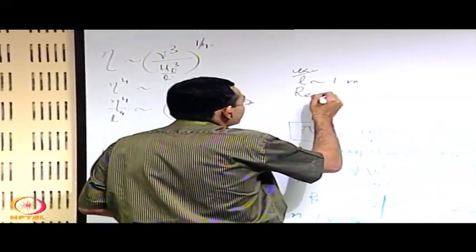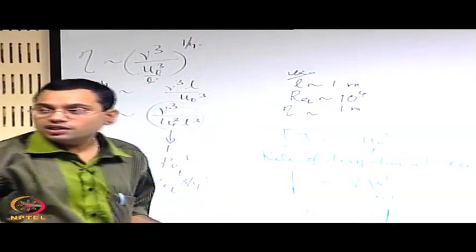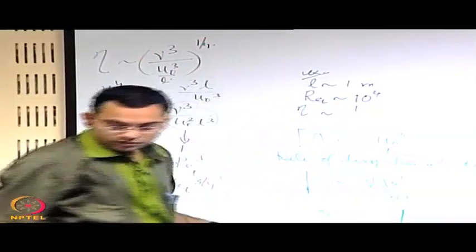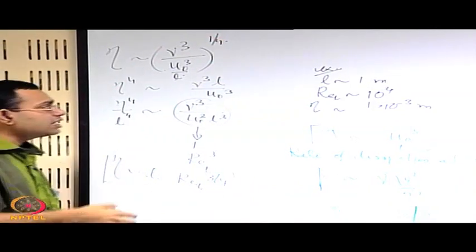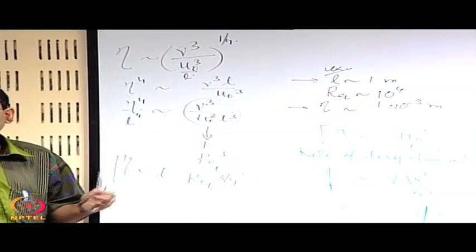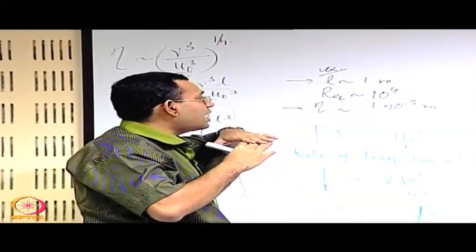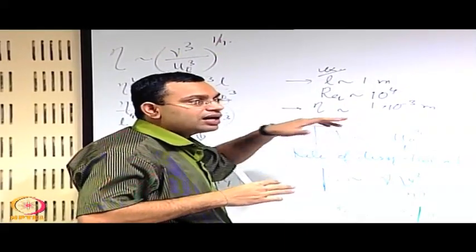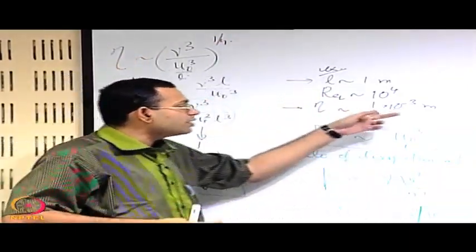Let us say the Reynolds number is 10 to the power 4. Then eta is l times Reynolds number to the power minus 3/4, which gives 1 times 10 to the power minus 3 meters. If you make the Reynolds number larger and larger, the disparity between l and eta becomes more and more. 10,000 is not a very large Reynolds number — it is just moderately large. If you make the Reynolds number really very large, this disparity will be more and more, and you have eddies at almost all intermediate length scales between these, differing in order of magnitude by at least 1000.